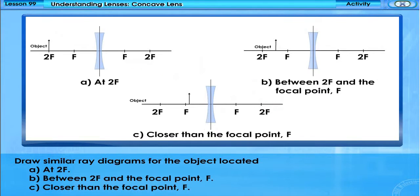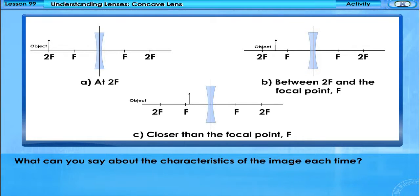Draw similar ray diagrams for the object located at 2F, between 2F and the focal point F, and closer than the focal point F. What can you say about the characteristics of the image each time?